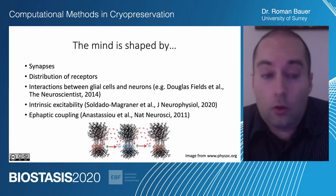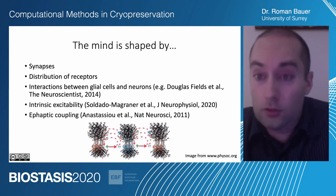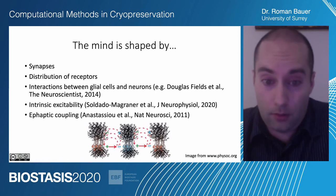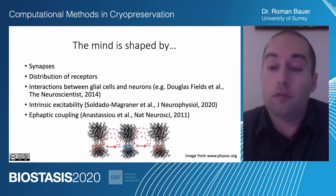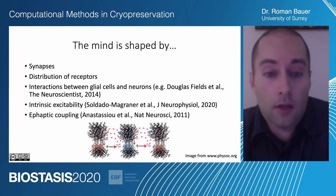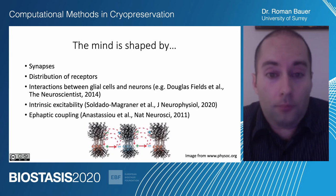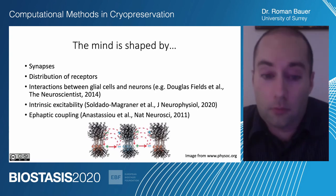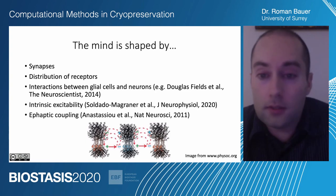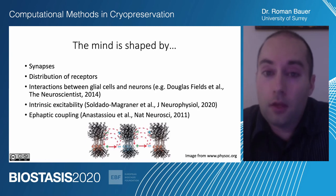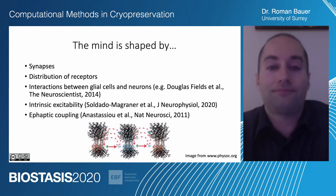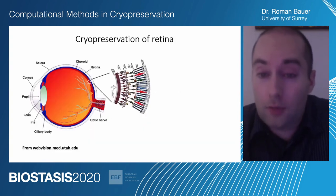Another example is so-called ephaptic coupling. This is actually a way for neurons to communicate without synapses — essentially the neurons create electromagnetic fields that influence the activity of other neurons. This has been shown to play a role in the workings of the brain. The point I'm trying to make here is essentially that neural tissues are extremely complex. They have a lot of components that are important in the functioning of the brain. And it is currently an open question whether one can cryopreserve mammalian neural tissues while maintaining the information required for it to work. And this is actually a question that we address in our research.